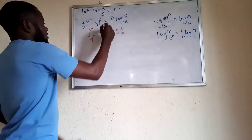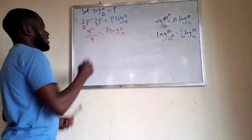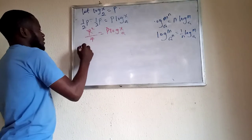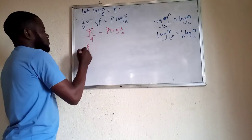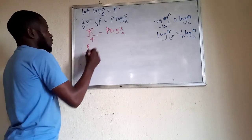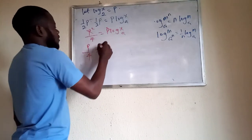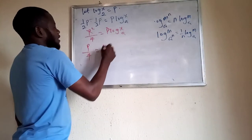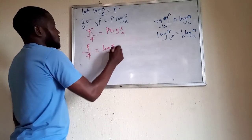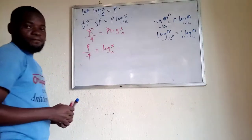The p on both sides cancels, so we are left with p over 4 equals log x in base a.